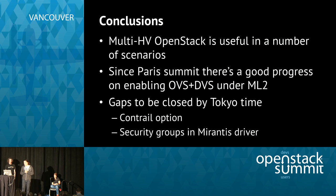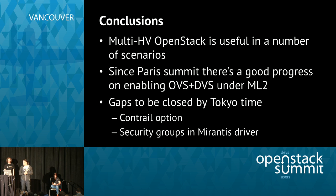Conclusions: multi-hypervisor OpenStack today is — A — possible, and — B — useful. You can do it with different hypervisors combined with KVM, and you can actually use it to: enable your developers, reduce the amount of money you spend on proprietary infrastructure, and cater for different needs of applications. You can speed up the adoption of OpenStack in your organization.